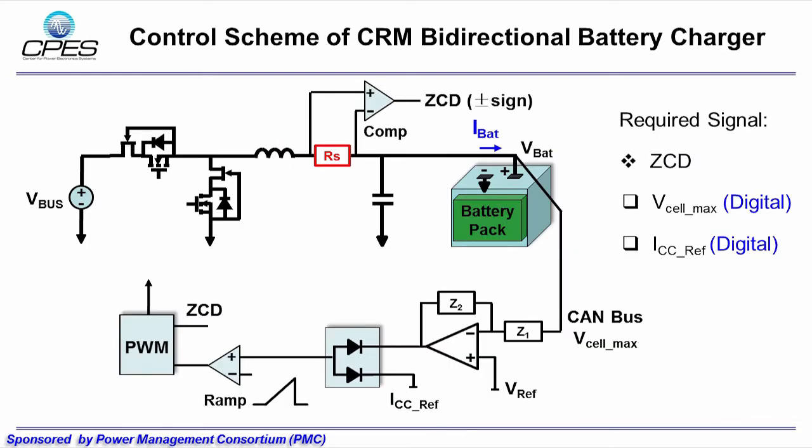This page shows a brief control diagram of one phase module of the battery charger system. The converter operates in critical mode. The required signals include zero current detection, maximum cell voltage, and the current reference. The ZCD signal can be generated by detecting the inductor current polarity. The control scheme is simple and capable for megahertz operation.